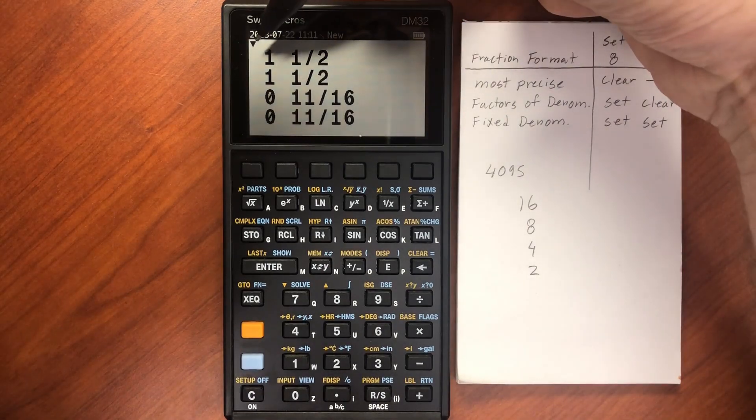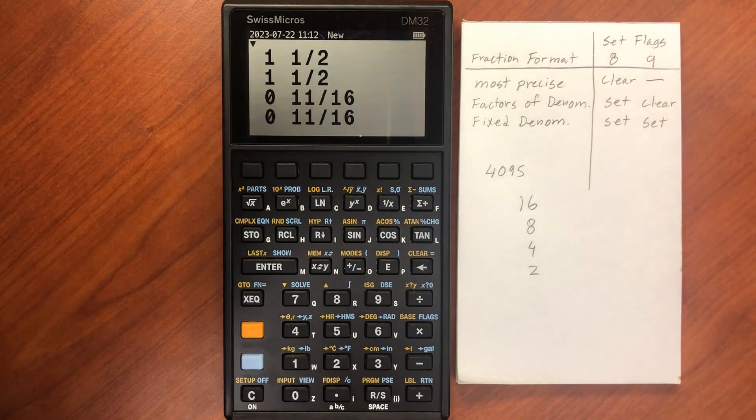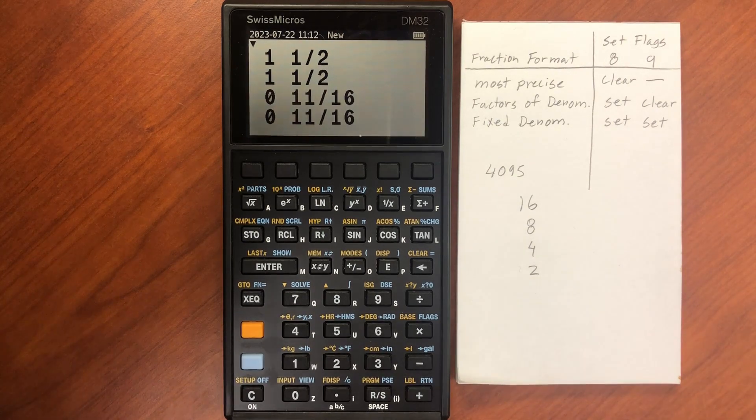And again, it's showing me that 11/16, the actual value is a little less than 11/16, but it gives me a value in 16ths or 8ths or 4ths or halves. So this is really useful for, say, woodworking.